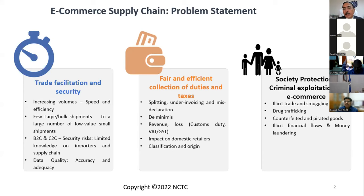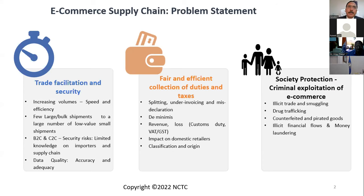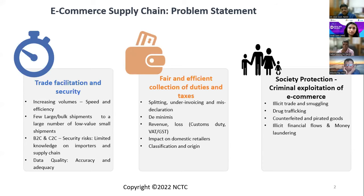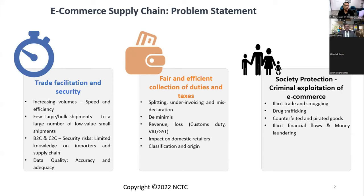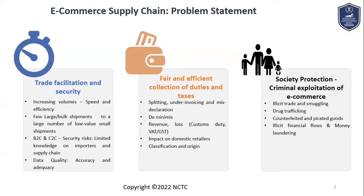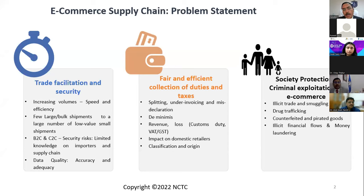We have to manage risk while understanding the level of understanding individuals have about supply chain and regulatory processes. There are data quality issues, yet we must ensure parcels reach doorsteps as soon as possible — we're talking about 24 to 48 hours end-to-end delivery. We have to manage all risks including security, safety, and revenue risk, while enhancing facilitation. Fair revenue collection is another area — as opposed to collecting revenue on bulk shipments, now collecting on small segments. Consumers expect the price shown on a web platform to be the final price, but often there are surprises over who will pay duties and taxes.